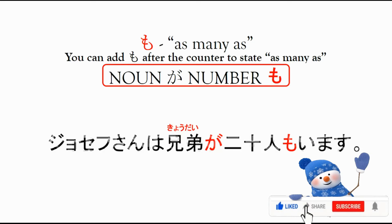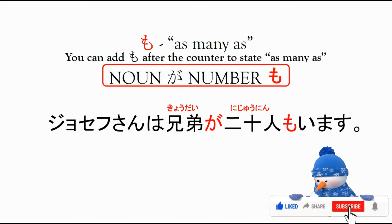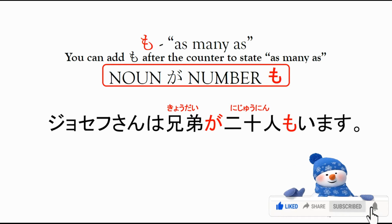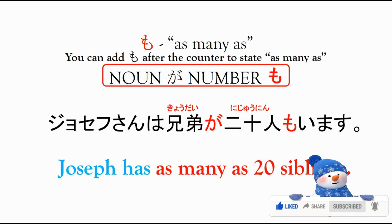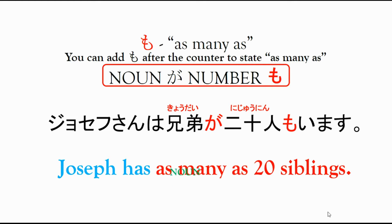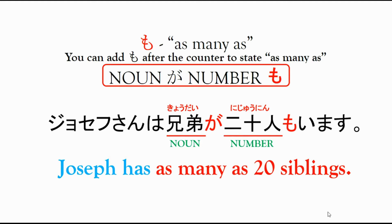For noun ga + number + mo, for example: Josefu-san wa, kyoudai ga, nijuunin mo imasu. This means Joseph has as many as 20 siblings. The noun used here is kyoudai, meaning siblings or kapatid. The number is nijuunin — that's the counter for persons. We add particle mo to state 'as many as', so kyoudai ga nijuunin mo means 'as many as 20'.